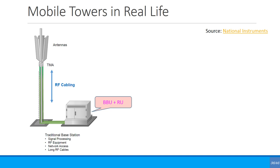The baseband unit handles layer 1, layer 2, and layer 3 processing. The radio unit contains the filters and power amplifiers. Those things need to be connected to the antenna via RF cables.